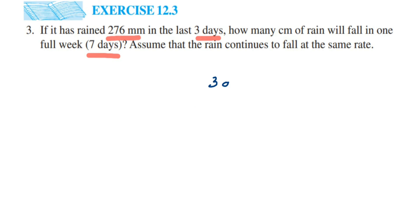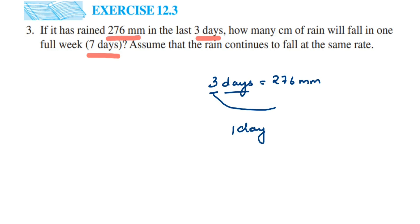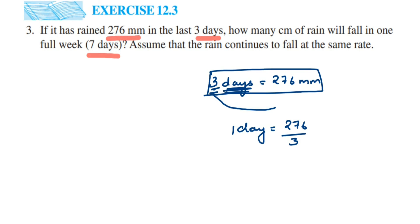We know that in three days it has rained 276 millimeters. To find out for one day, we transpose the three to the other side, so one day equals 276 divided by 3. We learned the transpose method in sixth class — if it's multiplication, it goes to division. Dividing 276 by 3 gives us 92.